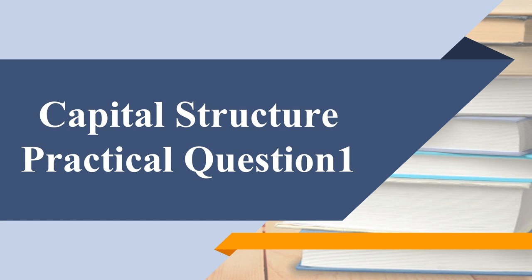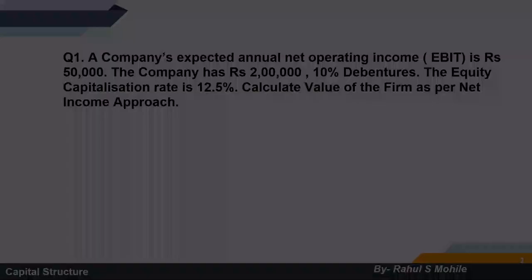Right now we will solve the first practical question, in which you have to calculate the value of the firm. The approach we will use is: calculate the value of the firm as per the Net Income approach. A company has an expected annual Net Operating Income, that is EBIT, of 50,000. The company has rupees 2 lakhs in 10% debentures.